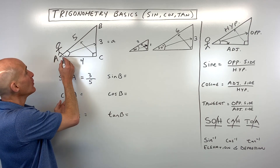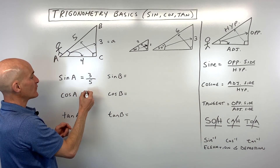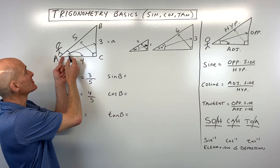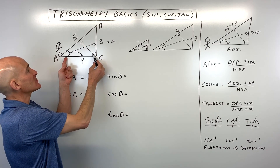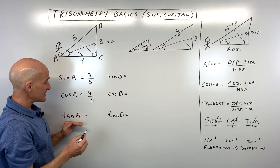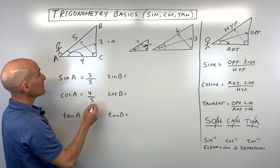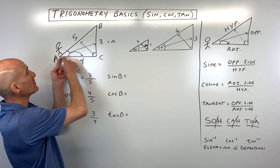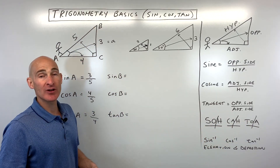The cosine of angle A is adjacent over hypotenuse — that's the 'CA' in SOHCAHTOA. Adjacent means next to the angle, which is four, divided by the hypotenuse, which is five. Note that five is always the hypotenuse — the one across from the right angle — not the adjacent side. The tangent of angle A is TOA: opposite over adjacent, which is three divided by four. A helpful strategy is to label the sides as opposite, adjacent, and hypotenuse right away, then use SOHCAHTOA to find each ratio.